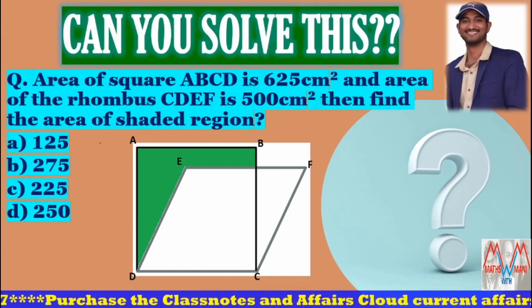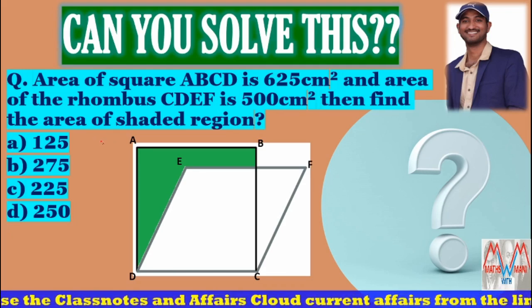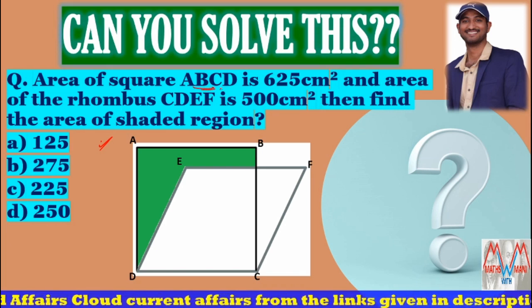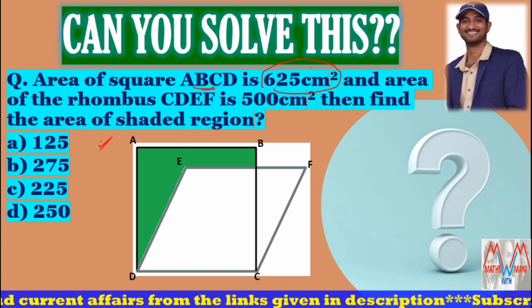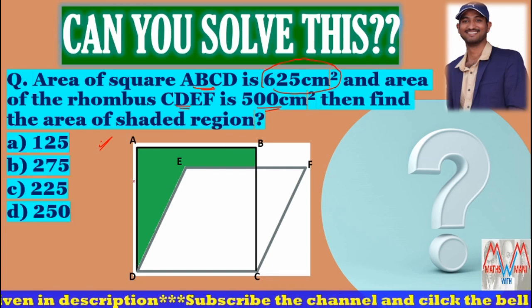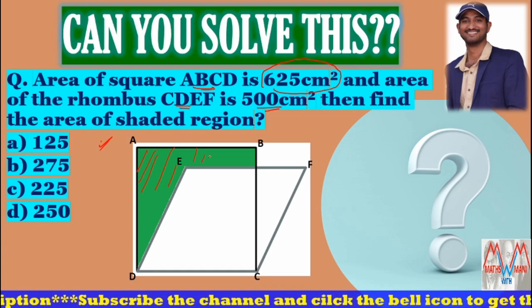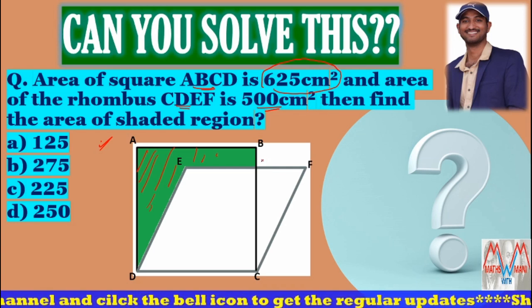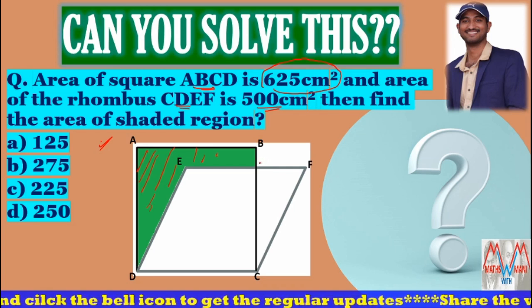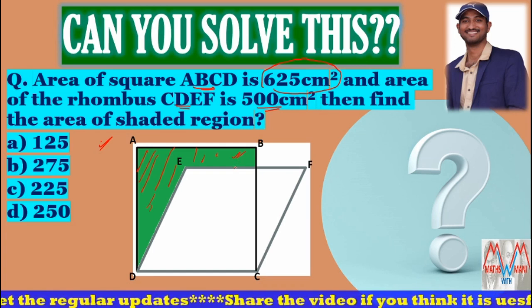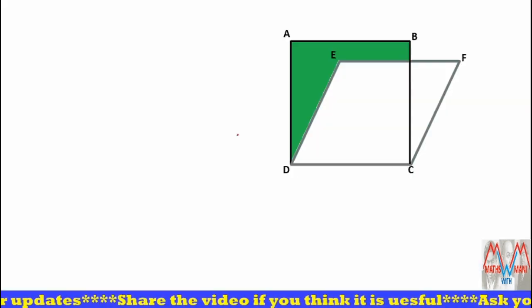This is yesterday's question which I asked in my community page and also Facebook page. The question is: Area of the square ABCD is 625 centimeter square and area of the rhombus CDEF is 500 centimeter square, then find the area of the shaded portion. The green portion is the shaded portion. So here there is a square and also rhombus having the same base, and you have to find out this green portion.